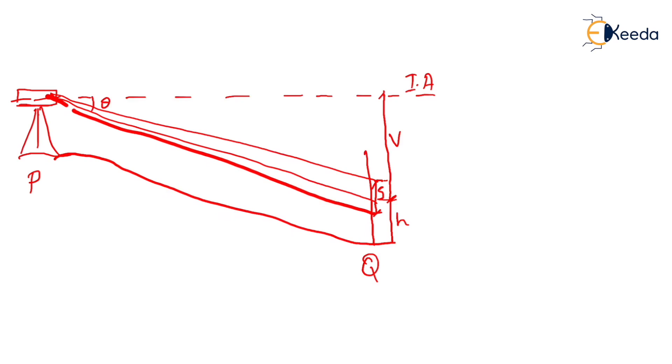Now we have to find out this horizontal distance between point P and Q, that is D, and we have to know the RL of point Q. The RL of P is given as 150 meters. So let us start with the solution.